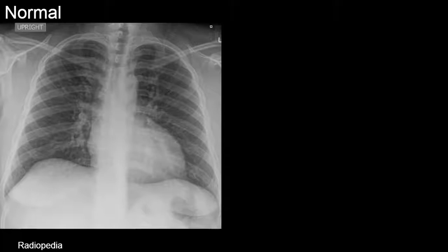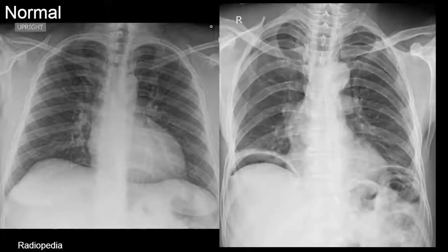Here's another example of a normal chest radiograph and you can see the upper abdomen here. There's no free air under the diaphragm, so on a chest radiograph we can often see abdominal findings as well.